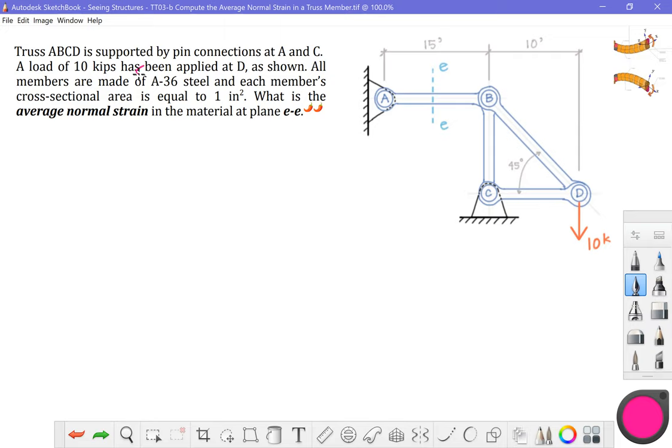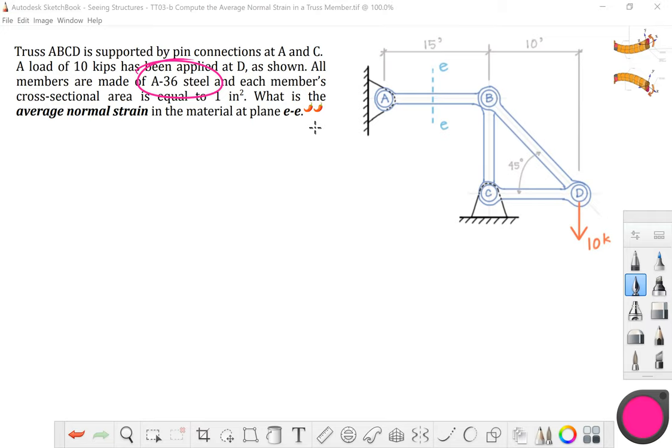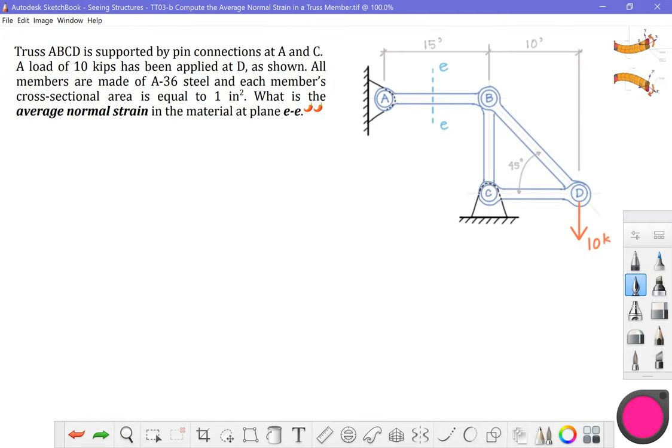All members are made of A36 steel. So, whenever you know a material specification, you can look that material up in the appropriate tables and find out what the material properties are of that particular steel alloy. We're also given some information that each member's cross-sectional area is equal to one inch squared. And we're asked to find what is the average normal strain in the material at plane EE. Plane EE is obviously shown here.